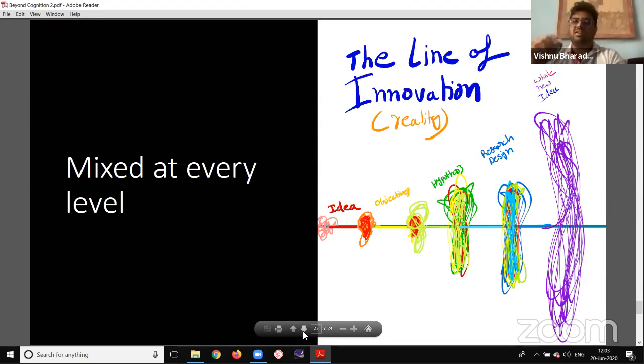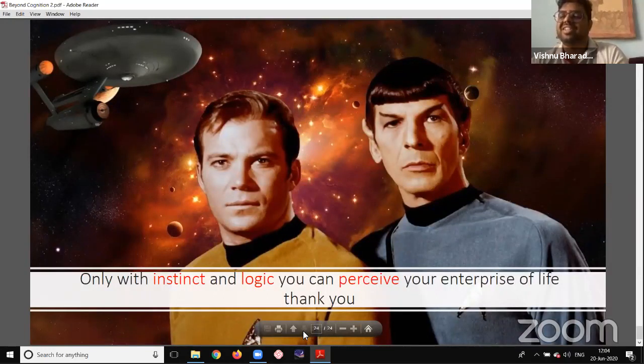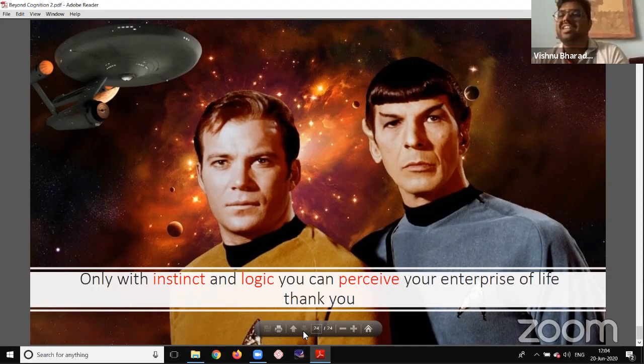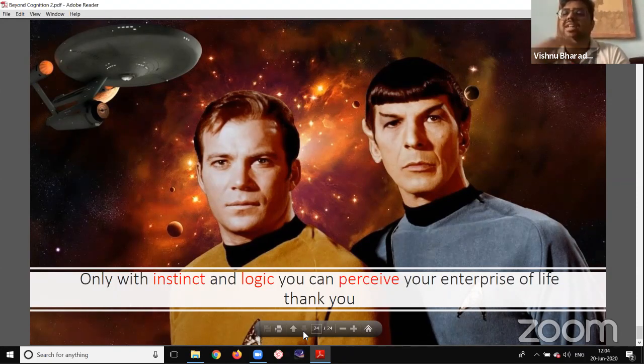So here I want to talk about line of innovation that happens in reality. So we have a mess where the cognitive process is happening. And then you have an organized segment, which is what you need to carry it forward. So you have an idea, you have a thought that breaks down into idea. Then you work. Then again you have a mess of thoughts that breaks down into objectives. Then again, it becomes into a hypothesis. Then this hypothesis works into a research design. Then you understand none of this is going to work and you need a whole new idea. That is how a cycle of innovation happens. Unless you need a logical and instinctive brain to perceive things and you need even emotional factors to analyze.